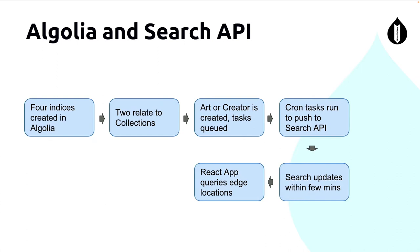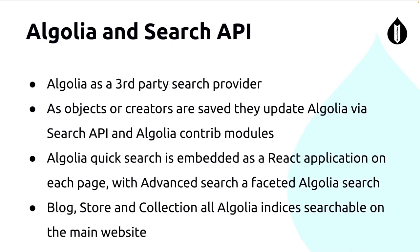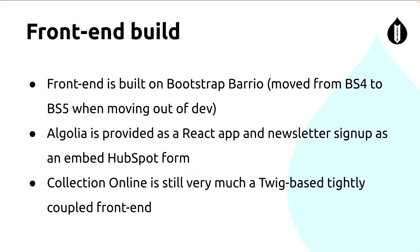Algolia: we have four indices — artists, artworks, store, and blog. Two of them are relevant to us. Cron queues up any changes that occur, either through migrate or manually, and pushes them into the index. We have a React app at the top — that's the type-ahead search you saw — and it queries Algolia's edge locations around the world. So that type-ahead is as fast here as it is overseas. Even though we're pushing from one spot, we have very fast search globally.